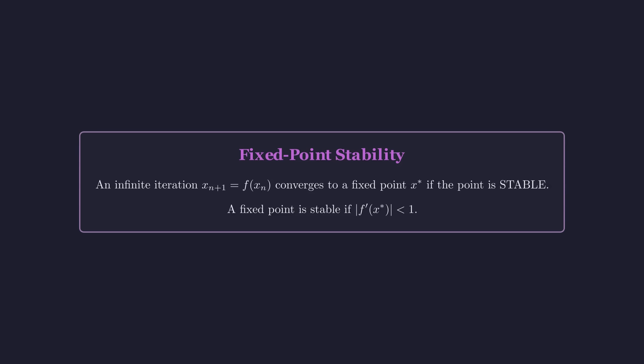A fixed point is a solution to the equation x equals f of x. The stability test is simple. If the absolute value of the derivative of the function at the fixed point is less than 1, the point is stable, or an attractor. If it's greater than 1, it's unstable, a repulsor.